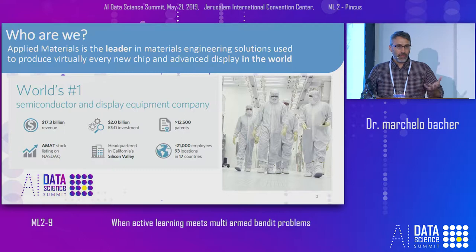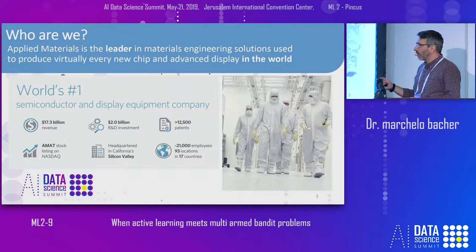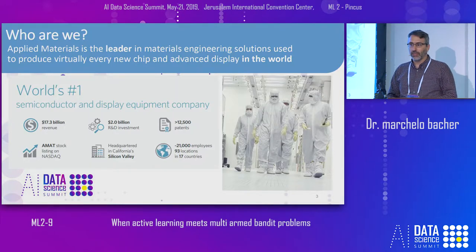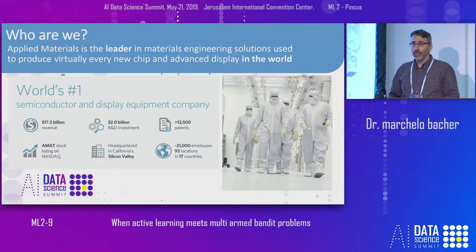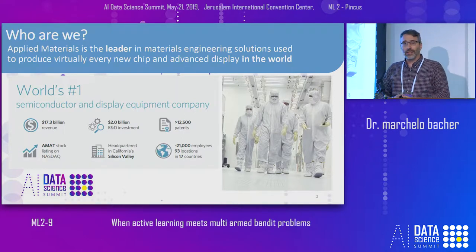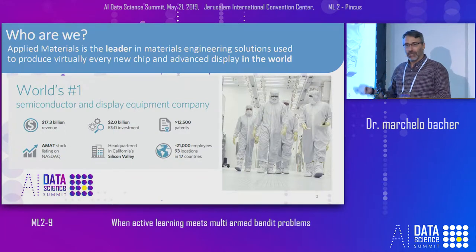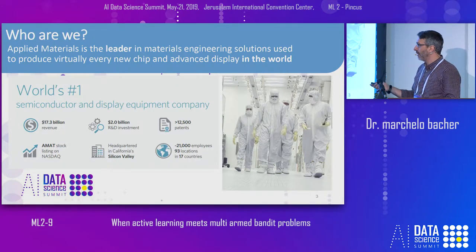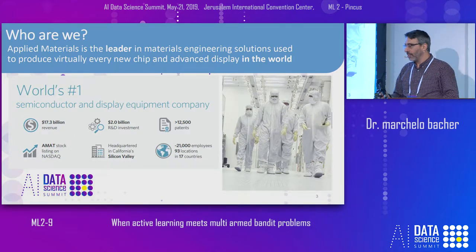Not all of you may know what Applied Materials does here in Israel or worldwide. Applied Materials is the world's first provider of equipment for the semiconductor industry — specifically equipment to develop chips, semiconductors, chips that you use in your phones, cars, screens, and wherever. I would say that there is almost no component in the world that wasn't spotted or created by one of the machines of Applied Materials. The headquarters is located in California and over the last year they invested around two billion dollars in research and development.